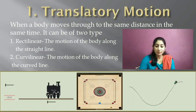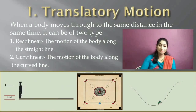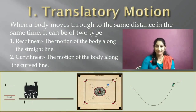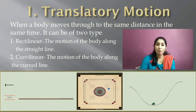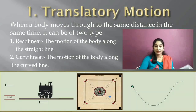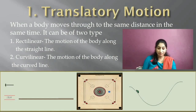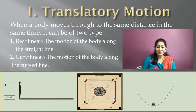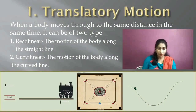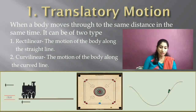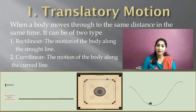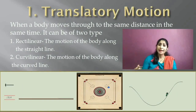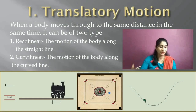Rectilinear motion — the name itself contains 'linear', meaning in a line. It is the motion of a body along a straight line. Examples include a train moving along a straight track, or a coin in a carom board that undergoes rectilinear motion when struck. Another example is a freely falling stone — as it comes down, it takes a straight-line, or rectilinear, motion.